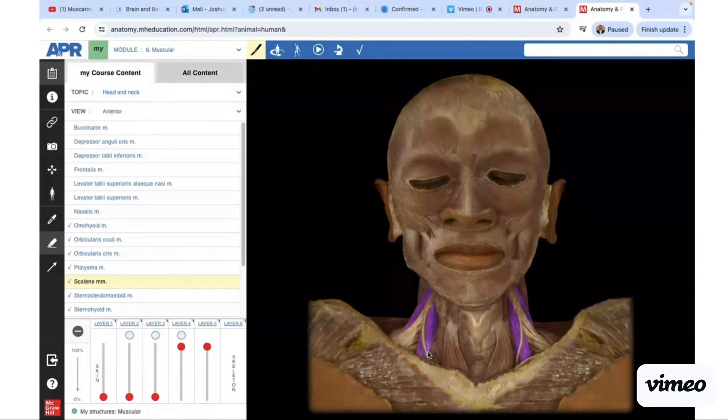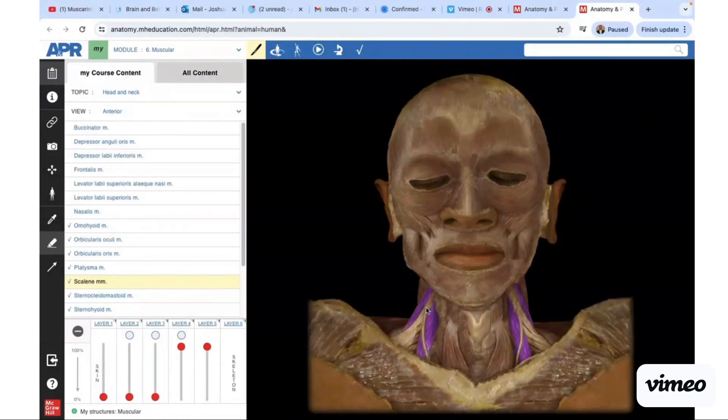You can see the phrenic nerve passing over the anterior scalene. That's actually going to the diaphragm to innervate the diaphragm. We have the nerve roots from C5 to T1 coming through the scalene, and then we have the trunks here, and it's going to turn into divisions as it passes under.